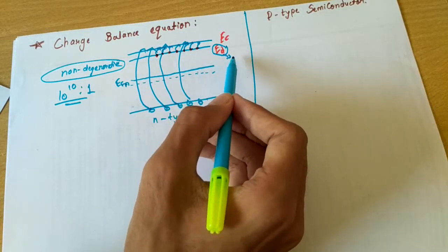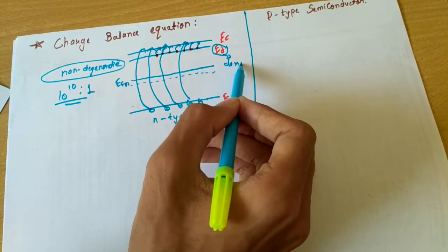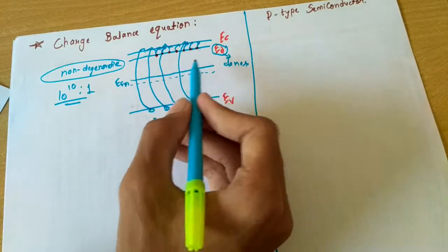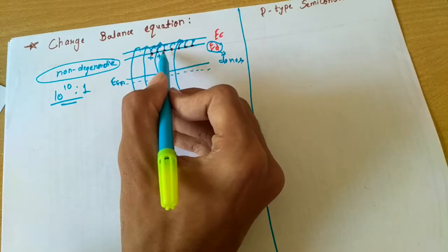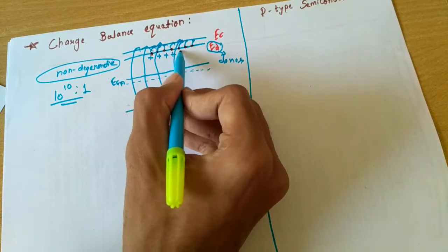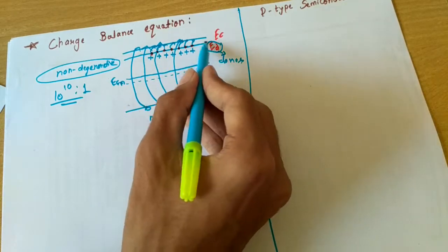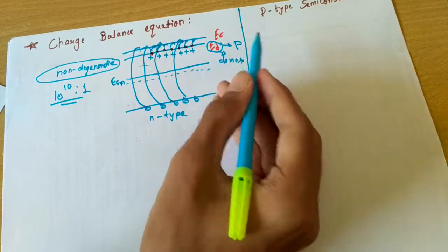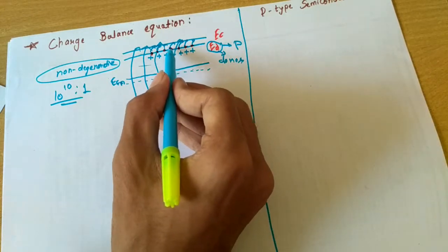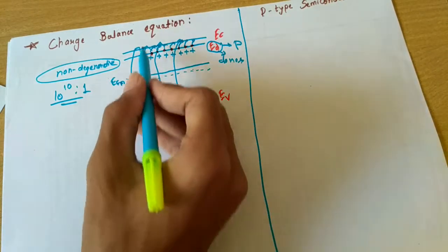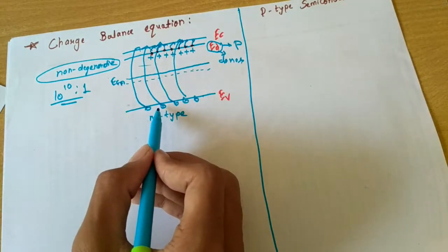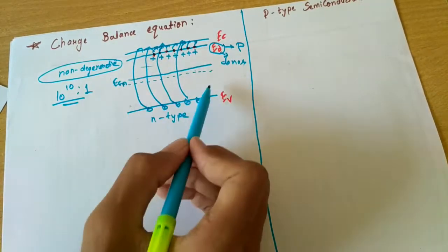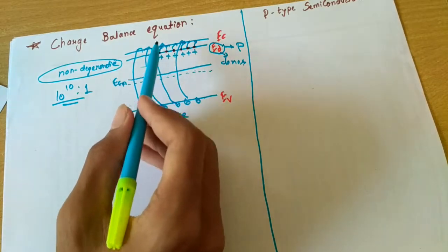This discrete energy level is denoted Ed — not for discrete but for donor — because they give their electrons as we increase the temperature and they become ions. We will get positive ions at this level. This level exists due to phosphorus, whereas the electron-hole pair is of the same semiconductor. These two bands — conduction and valence — are of the silicon semiconductor.